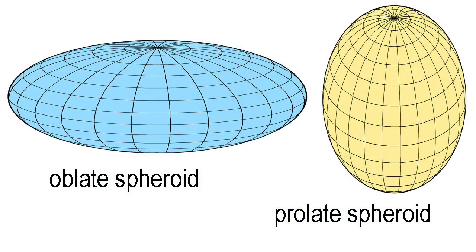A spheroid is a surface in 3D obtained by rotating an ellipse about one of its principal axes. If the ellipse is rotated about its major axis, the surface is called a prolate spheroid, similar to the shape of a rugby ball or American football.